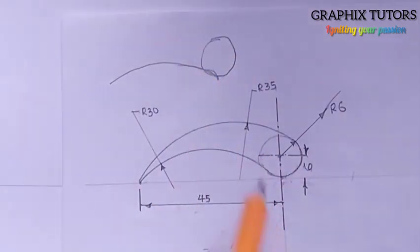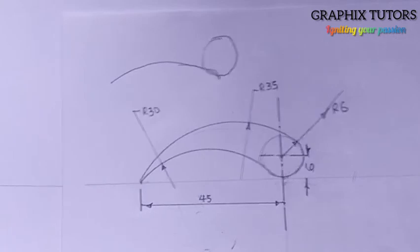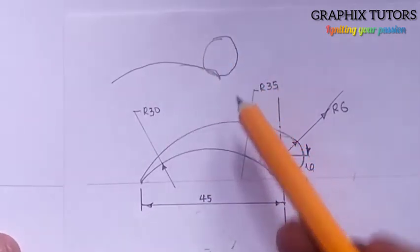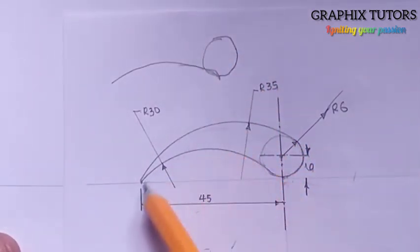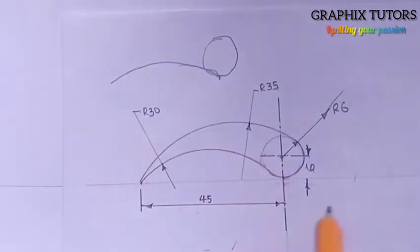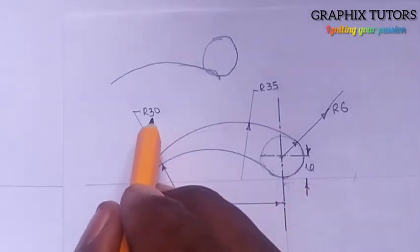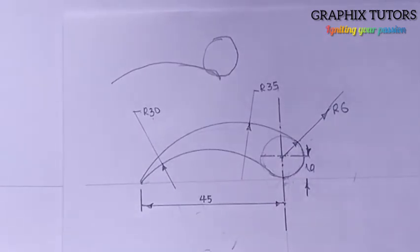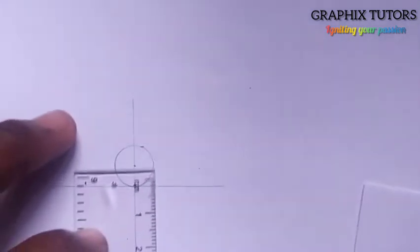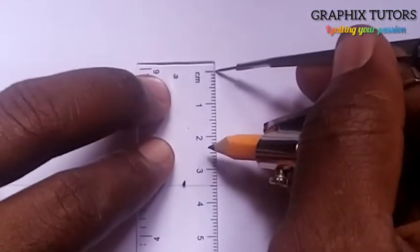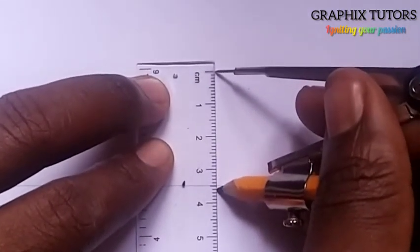This kind of arrangement — where the circle is on top of the arc — you call it external. When it's external you are going to add. So you add: the arc radius is 30, and the circle radius is 6, so 30 plus 6 gives us 36. I'll come to my meter rule and measure 36 — from zero down to this point is 36.